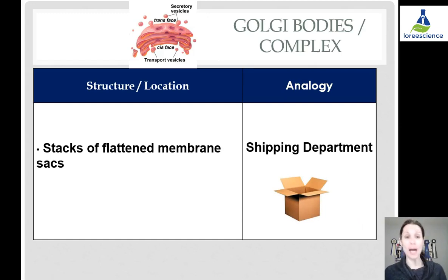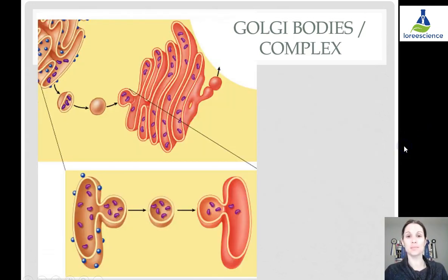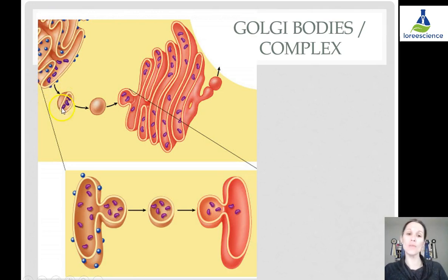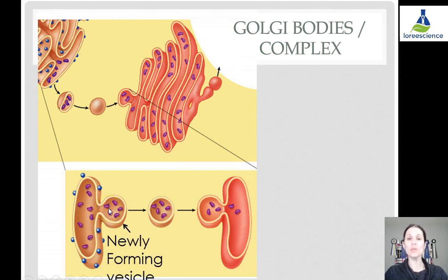Golgi bodies, also called the Golgi complex or Golgi apparatus, are a flattened stack of membranes not connected to the nucleus — found somewhere else in the cytoplasm. The analogy is like the shipping department: they take things and package them so they can leave the cell or the factory. The endoplasmic reticulum packages some proteins into a vesicle, which travels through the cytoplasm, binds to the Golgi complex for further processing, and is then formed into another vesicle that fuses with the cell membrane and expels its contents outside the cell.